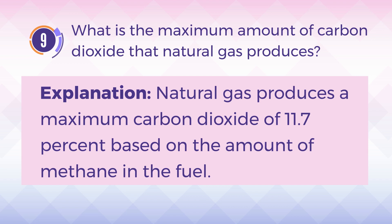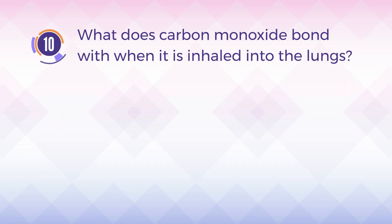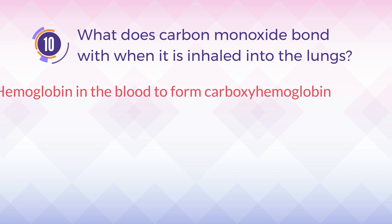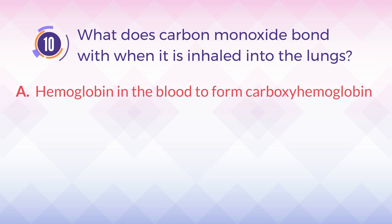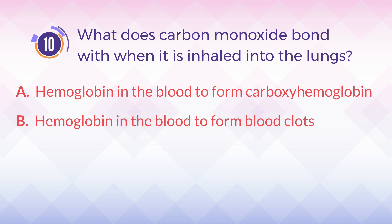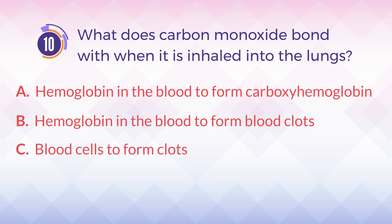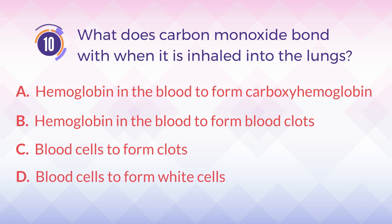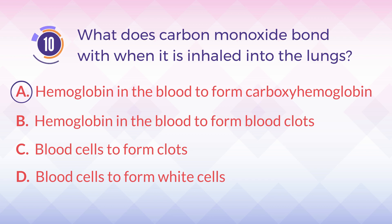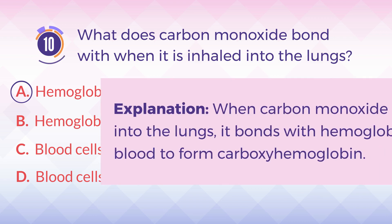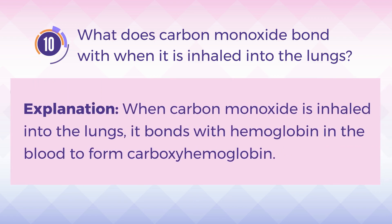Number 10. What does carbon monoxide bond with when it is inhaled into the lungs? A. Hemoglobin in the blood to form carboxyhemoglobin. B. Hemoglobin in the blood to form blood clots. C. Blood cells to form clots. D. Blood cells to form white cells. The answer is A: hemoglobin in the blood to form carboxyhemoglobin. When carbon monoxide is inhaled into the lungs, it bonds with hemoglobin in the blood to form carboxyhemoglobin.